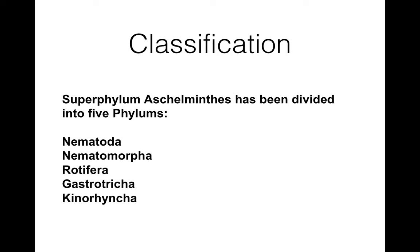In the previous lecture I discussed the general characteristics of Ecdysozoa. Ecdysozoa is a superphylum and it has been divided into five phyla: Nematoda, Nematomorpha, Rotifera, Gastrotricha, and Kinorhyncha.